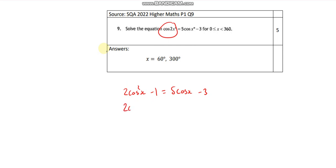Then I'll get everything over to the one side. So 2 cos squared x, take away 1, and then I'll take away my 5 cos x and take away 3. So that's now equal to 0. I'll move everything over, and then I'll just group my like terms.